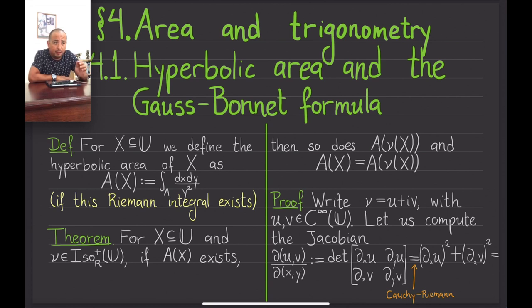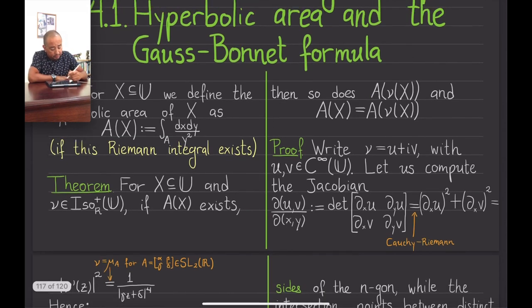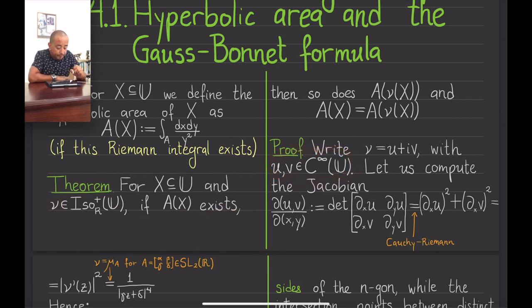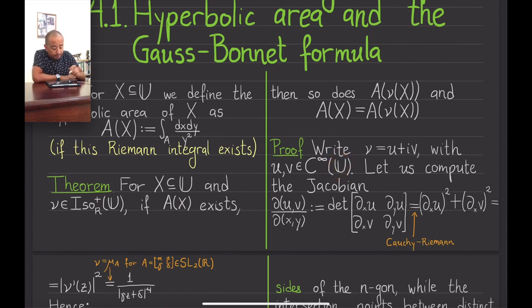The proof comes down to the fact that the Jacobian of ν is related to the norm of a certain complex number. Since ν is a function from U to U, we can write it in terms of its real and imaginary parts u and v, where u and v take real values. Note that v always takes positive values. We want to compare an integral and the integral after applying ν, so we compute the Jacobian of ν as a function from ℝ² to ℝ².